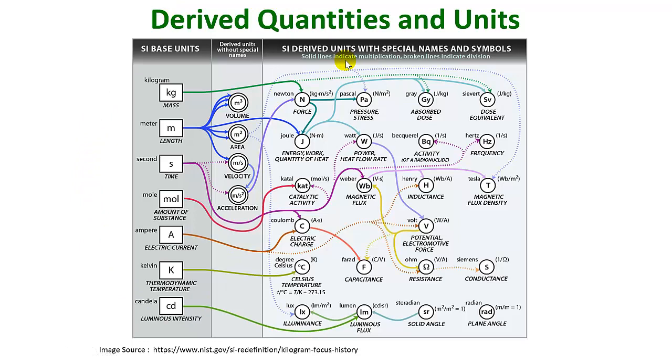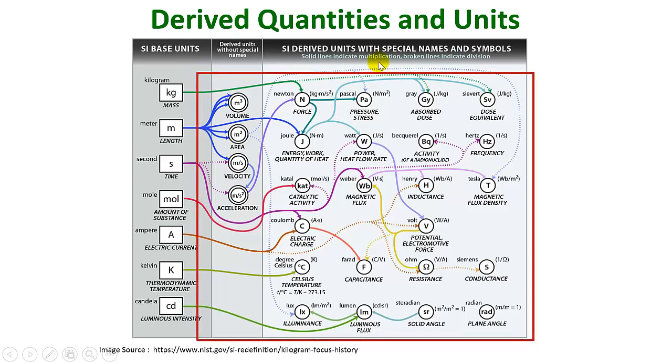From the table above, you can see the leftmost column lists the seven SI base quantities and their units. The remaining columns list physical quantities that are not among the seven base quantities.